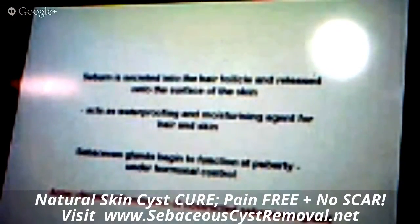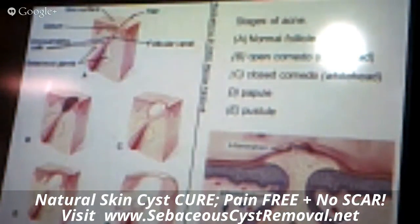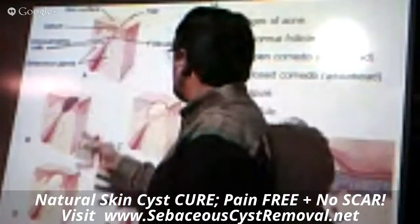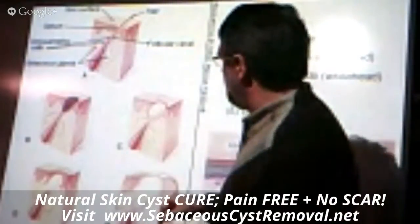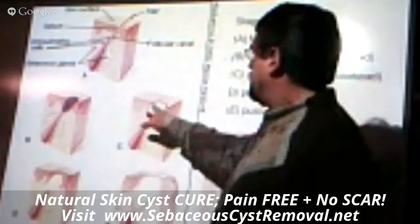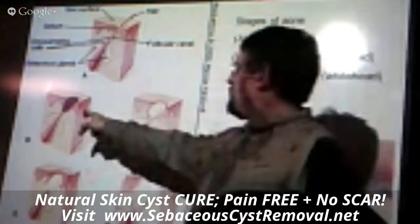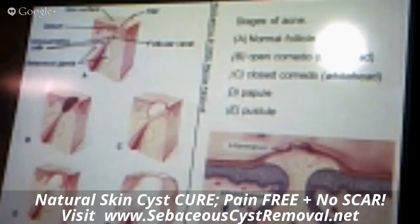The oil-producing glands moisturize hair and skin and keep them flexible. These are also the glands infected in acne. The progression of a zit: bacteria come into the gland and cause infection, leading to the production of pus, which becomes the white head on top of the zit. This is very different from what's going on in a blackhead.